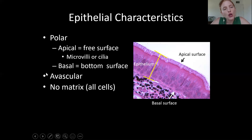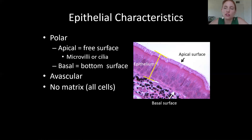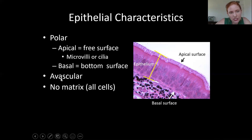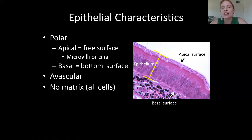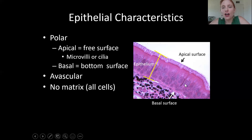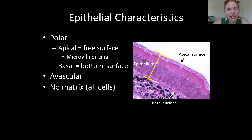In science, whenever you see a word with an 'a' at the beginning, it means it's missing whatever comes after it. For example, red blood cells are anucleated — they don't have a nucleus. In this context, avascular means no blood vessels. Epithelial tissues have no blood vessels because they are all cells — there is no non-living matrix, just solid cells packed together.